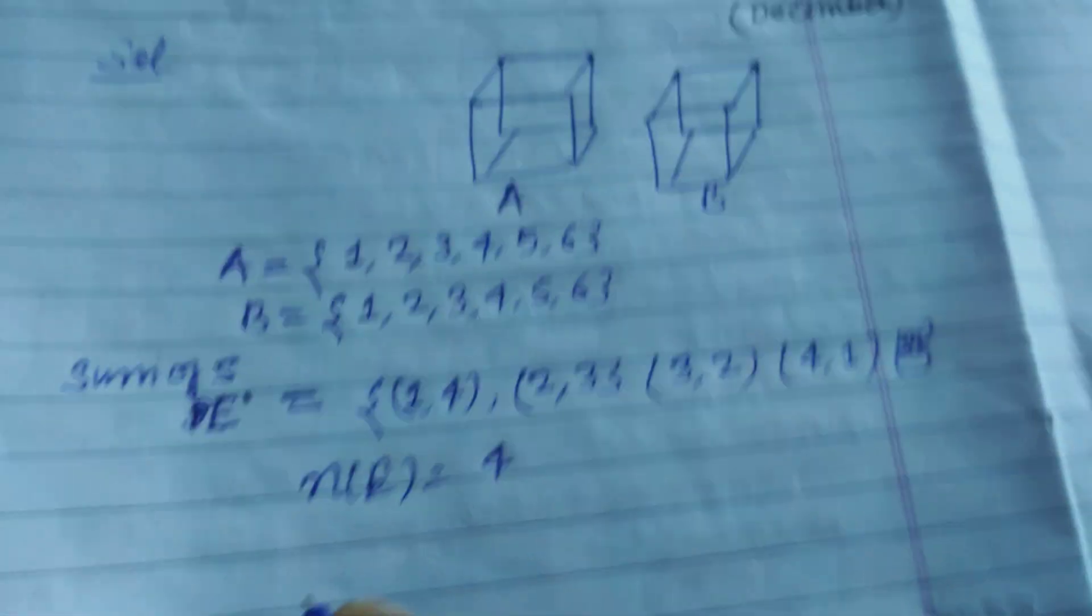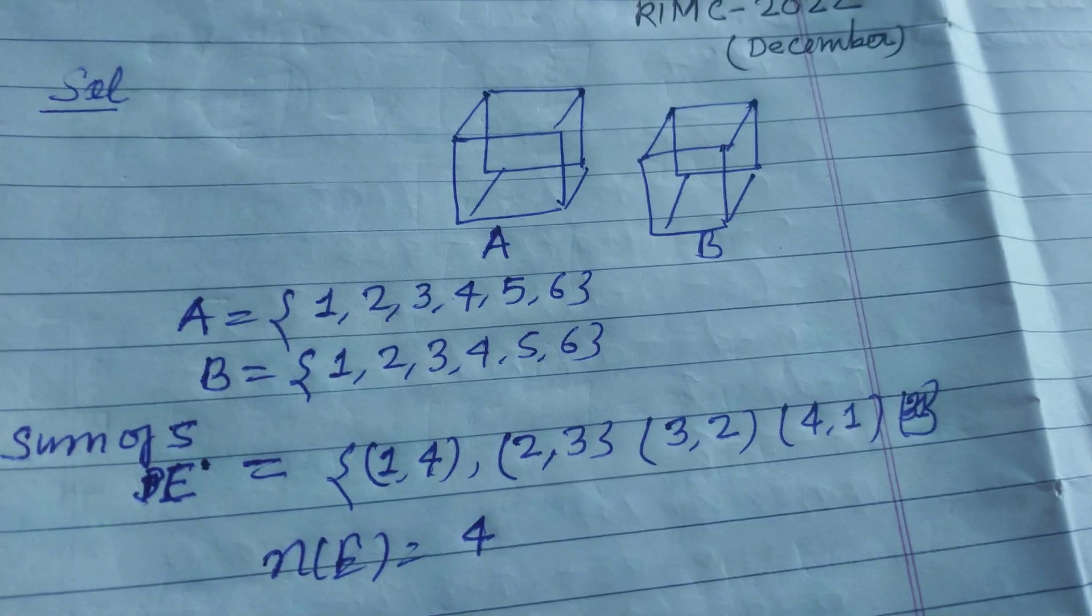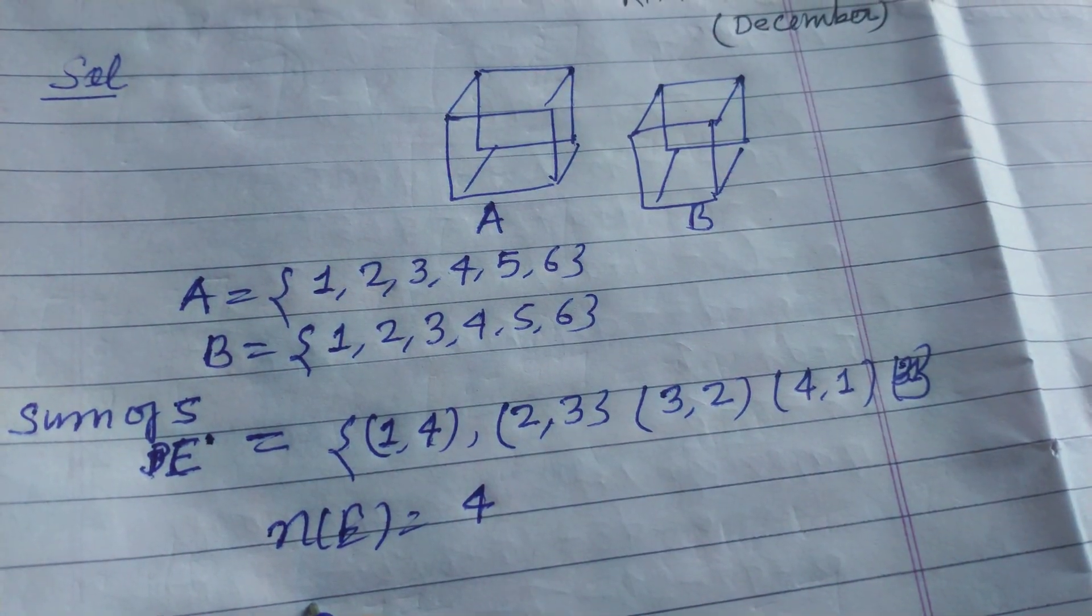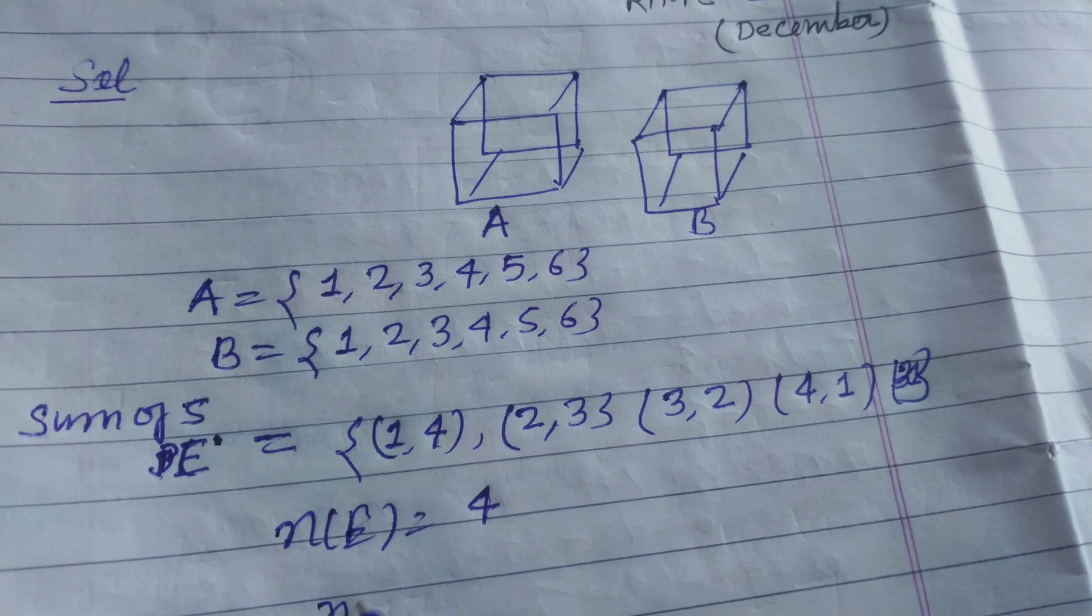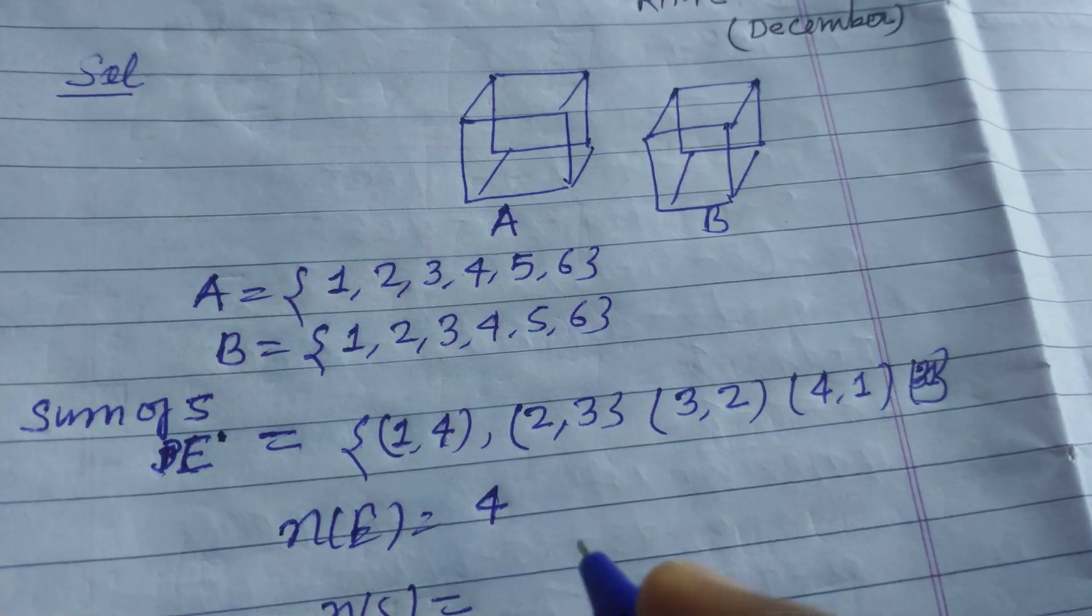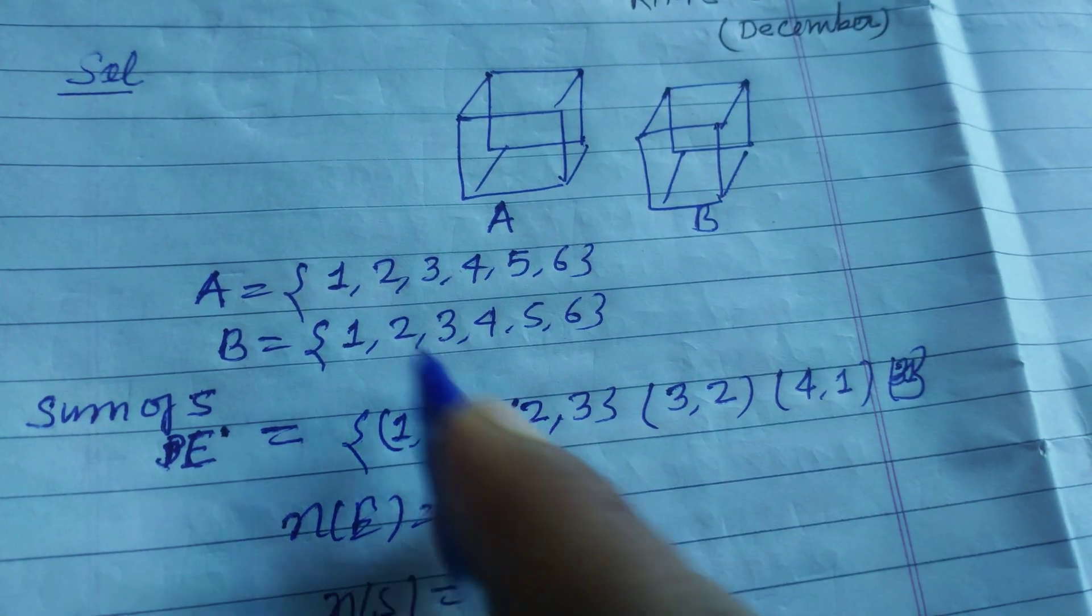Now the number of elements, n(S) total is 6 by 6, so this is 36.